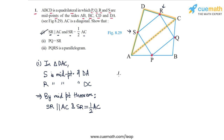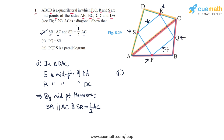Now let's do part two. In part two, we have to prove that PQ is equal to SR. PQ is this segment here and SR is this segment here. To prove this, we will first find the relation between PQ and AC, and to do that we will apply the midpoint theorem to triangle BAC. Let me highlight this triangle for you. We are going to apply the midpoint theorem to triangle BAC. The two midpoints in this triangle are P, the midpoint of AB, and Q, the midpoint of BC.